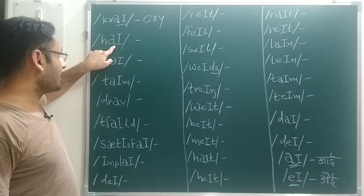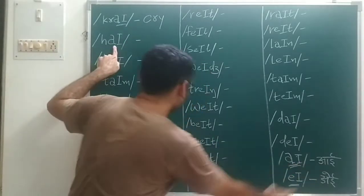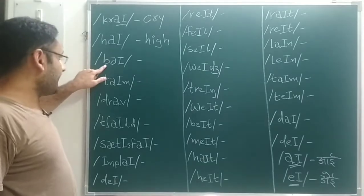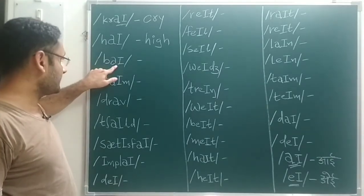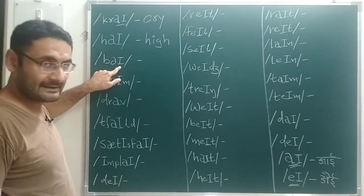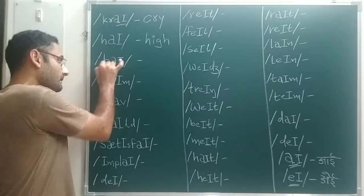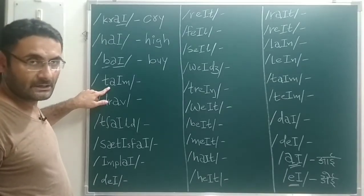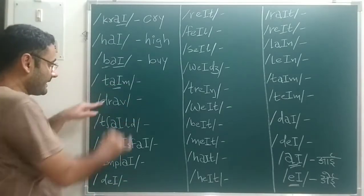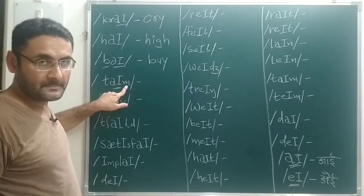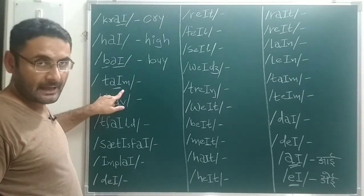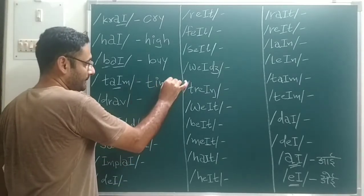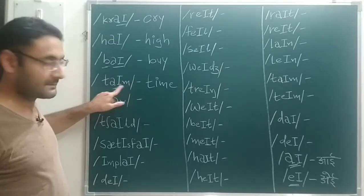Next: I sound again — B, I — that gives us 'by'. So I write: by. Next: I sound, T sound, M sound — T, I, M — that is 'time'. So I will write: time.